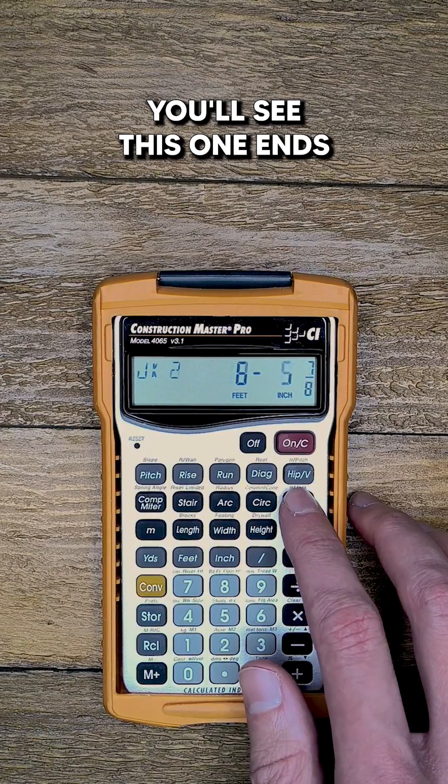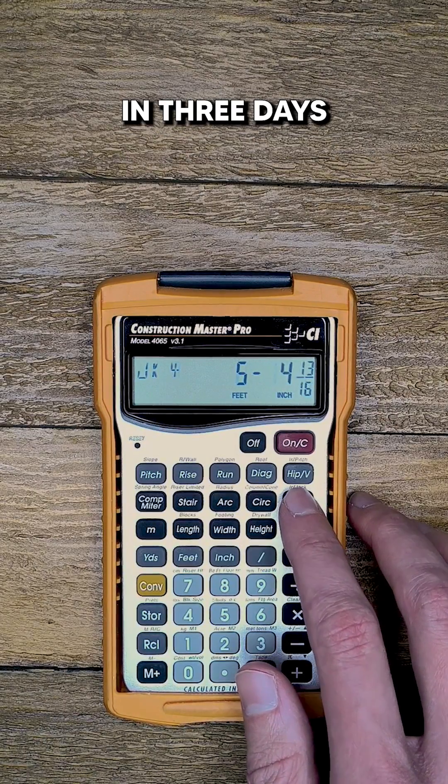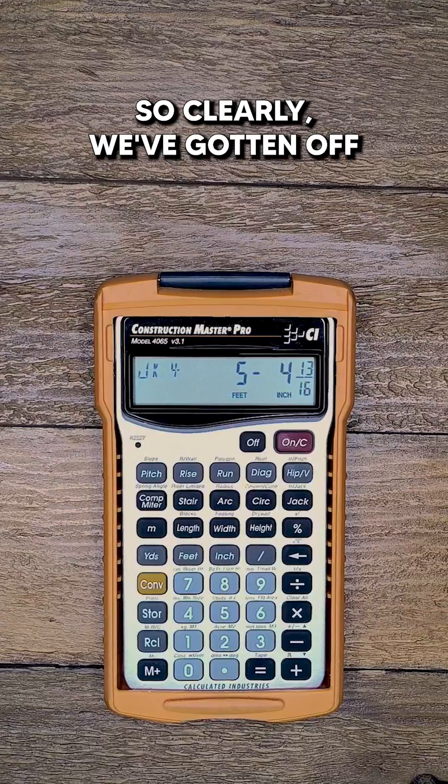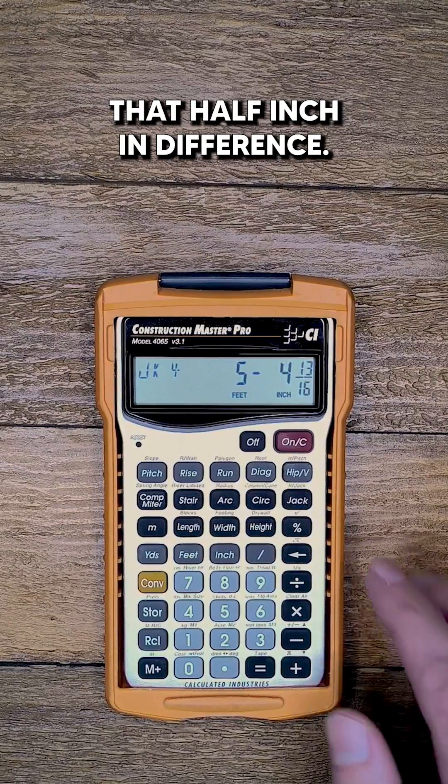But if you toggle through the jacks, you'll see this one ends in three eighths, and the next one ends in thirteen sixteenths. So clearly we've gotten off that half inch in difference.